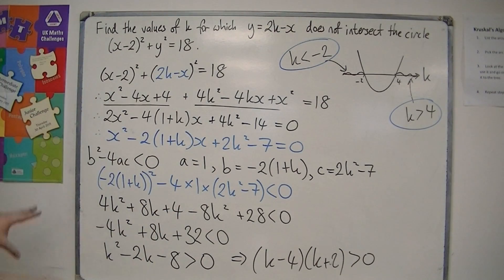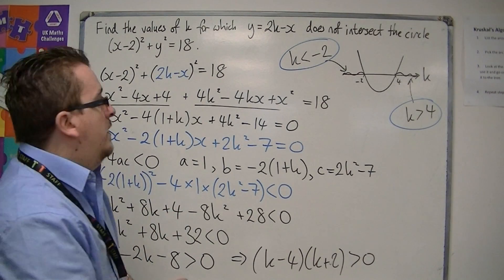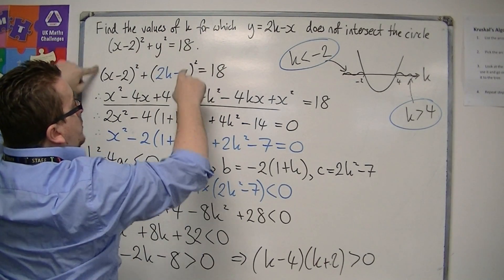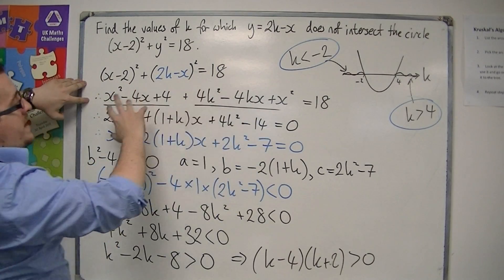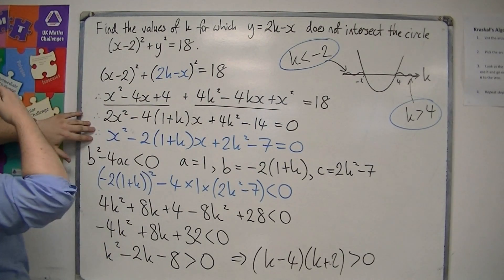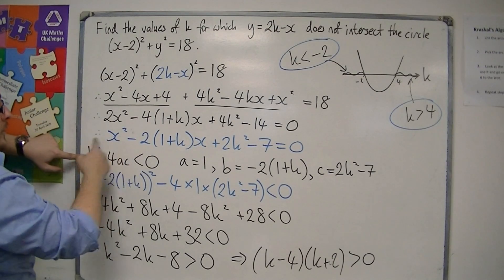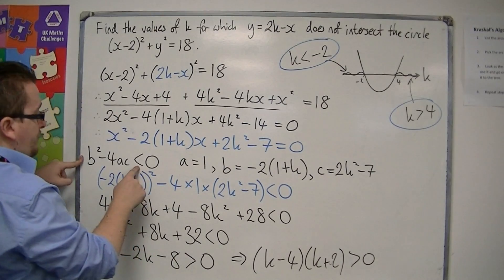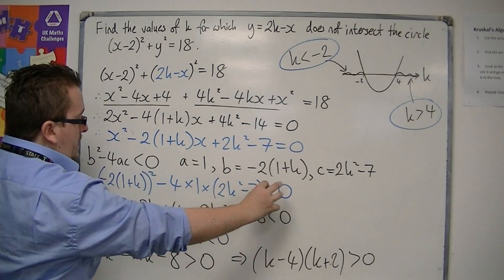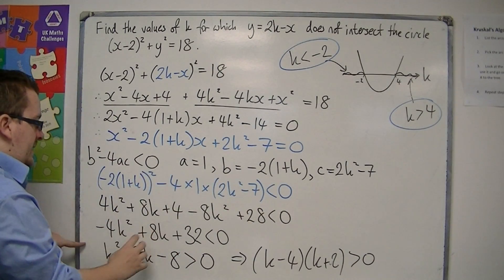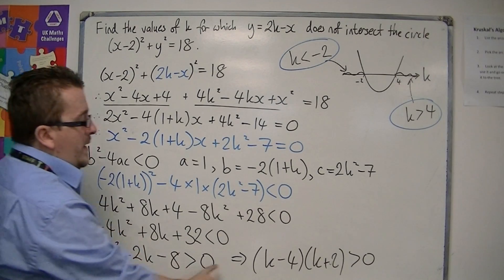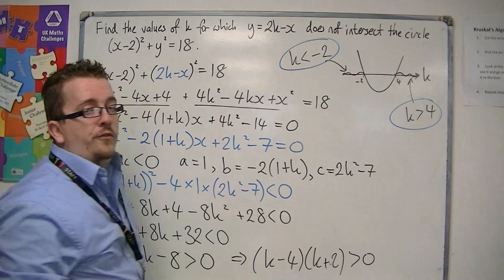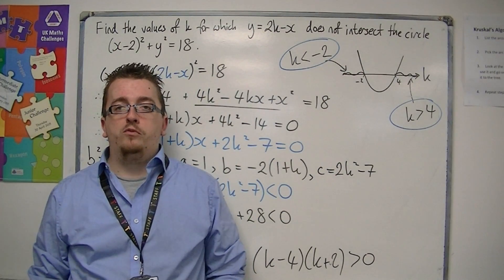It's quite algebra-heavy. We started off by substituting the line into the circle, multiplied everything out, simplified the equation down, then used the discriminant — which must be less than 0 because there's no intersection — substituted our values in, simplified down again to a simpler quadratic, which we then factorised, sketched, and identified the sections needed to solve the problem.